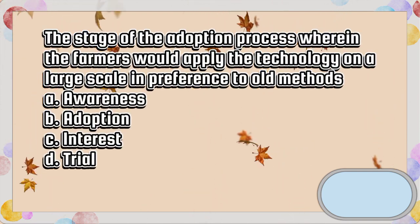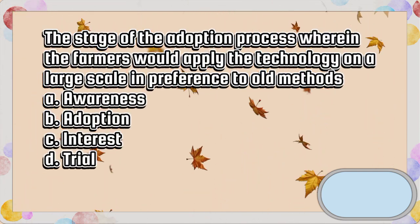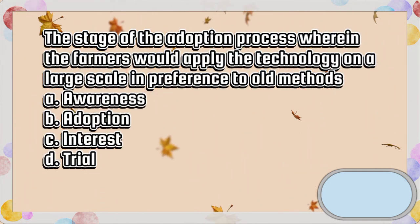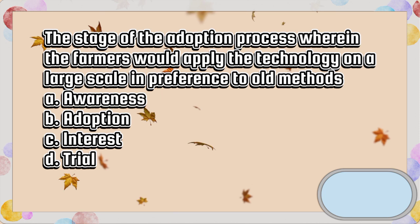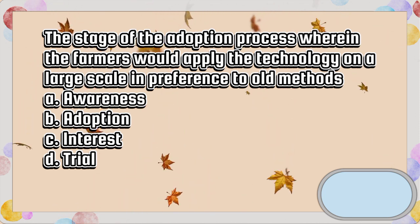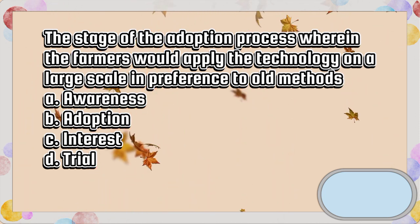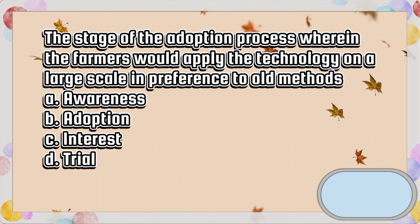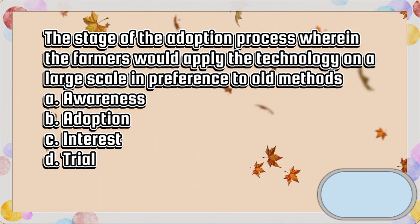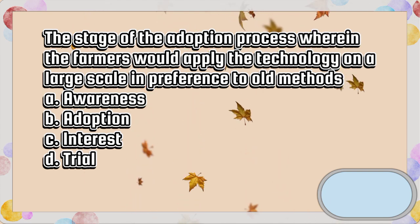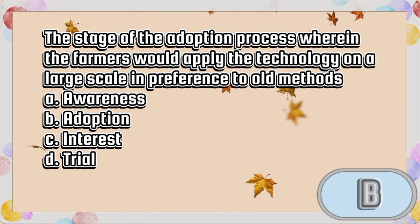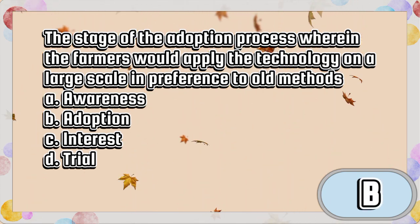The stage of the adoption process wherein the farmer would apply the technology on a large scale in preference to old methods. A. Awareness. B. Adoption. C. Interest. D. Trial. The answer is letter B.